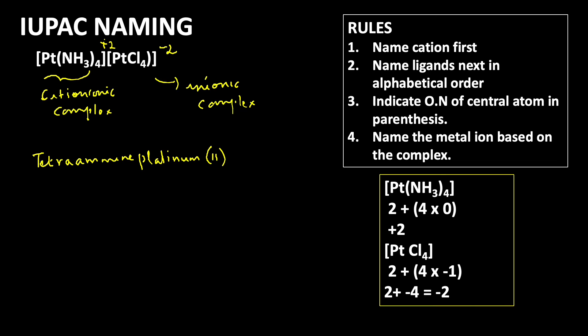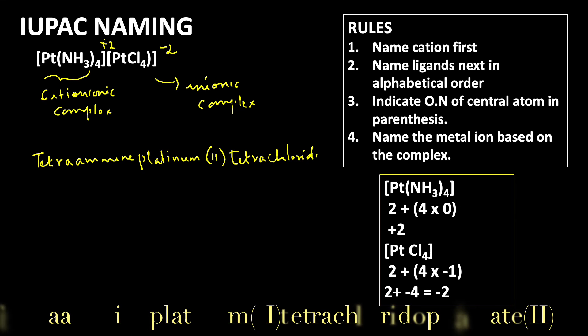Again for the second complex, there are 4 chloride groups present, so tetrachloro. It is an anionic ligand, so it ends with O: chlorido. Then after that, platinate. Platinate—it's an anionic complex, so the central ion should end with -ate. Again we write the oxidation state: 2.